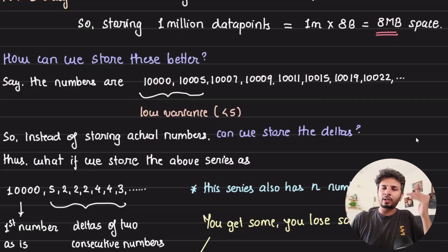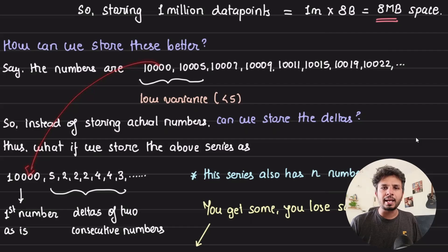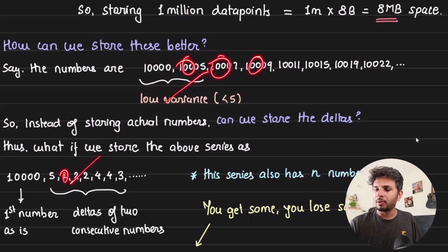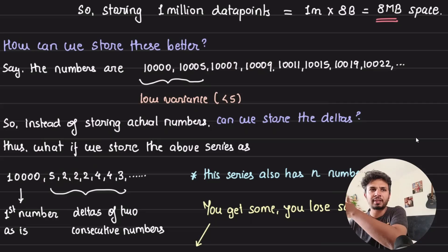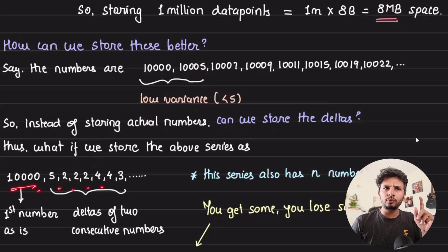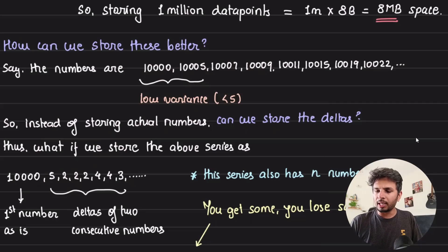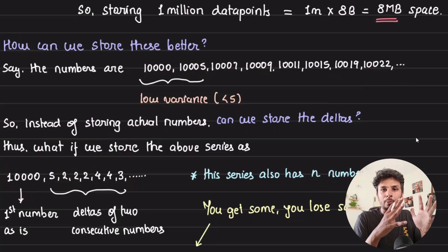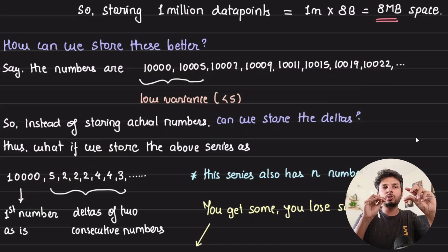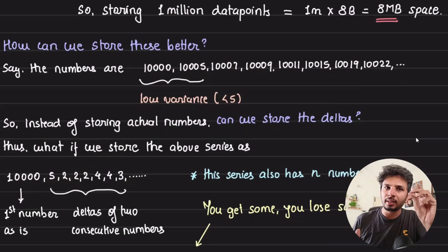Instead of storing actual numbers, what if we store the delta between values? We store the first number as-is, then store second minus first, third minus second, fourth minus third, and so on. So instead of storing 10000, 10005, 10007, 10009, 10011, we store the deltas. If the series has N elements, the delta representation also has N elements — we're not reducing data points, just storing smaller values.